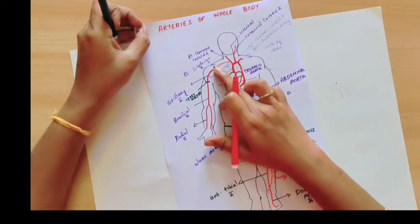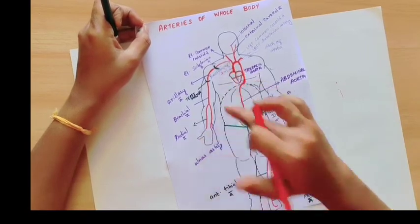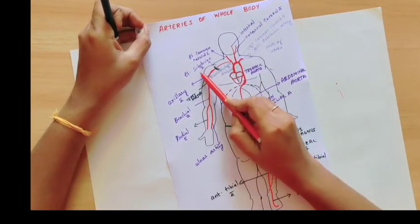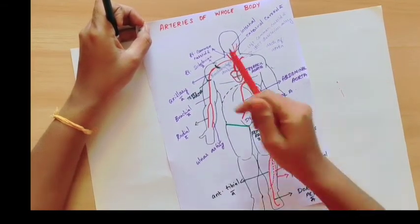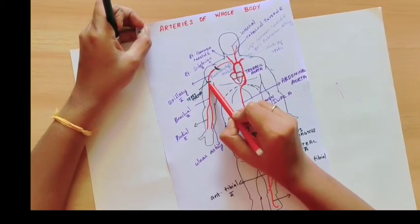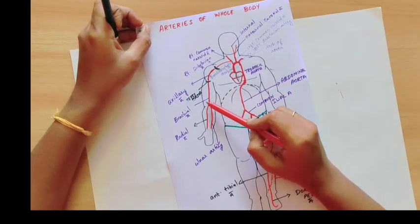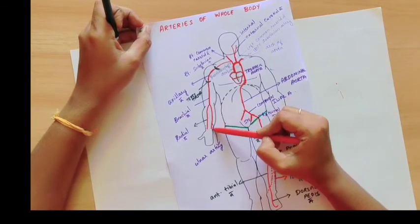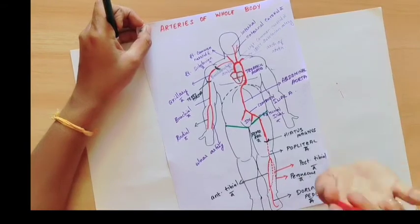The right subclavian artery runs under the clavicle — that is why it is named the subclavian artery. When the subclavian artery crosses the first rib, it becomes the axillary artery, named for the axillary region. When it crosses the teres major muscle, it becomes the brachial artery. The brachial artery then divides into the radial artery and the ulnar artery — named after the radius bone and ulnar bone respectively.